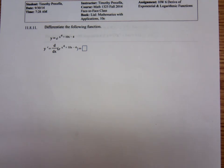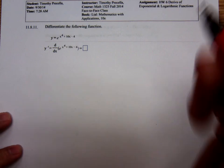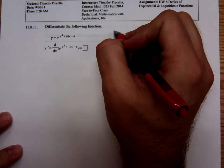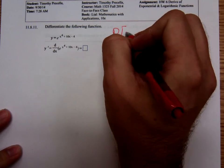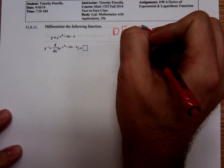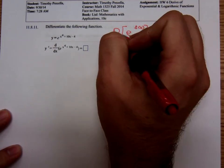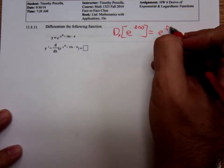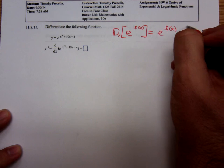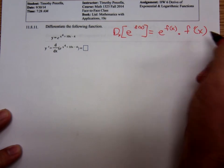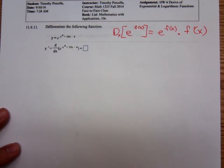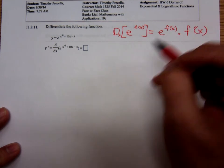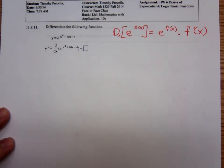Recall we have a derivative rule for differentiating a natural exponential. To differentiate e to a function of x in terms of x, it's just e to the function of x times the derivative of the exponent, f prime of x. Realize this f prime of x is not up there in the exponent with the original f of x.